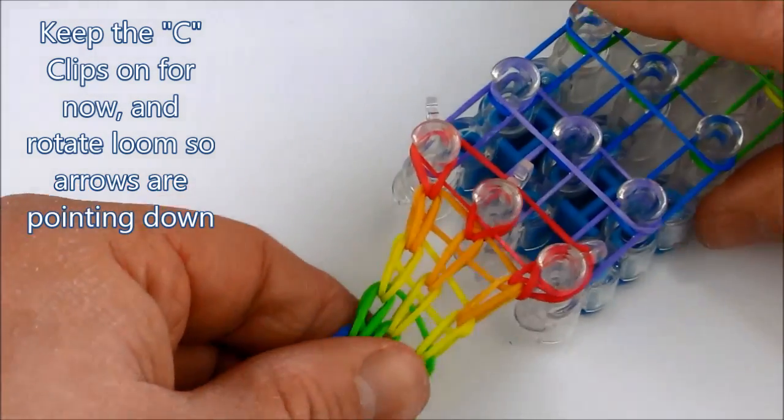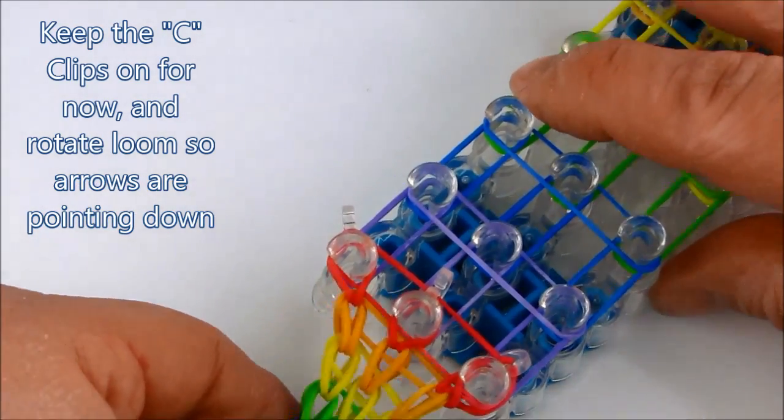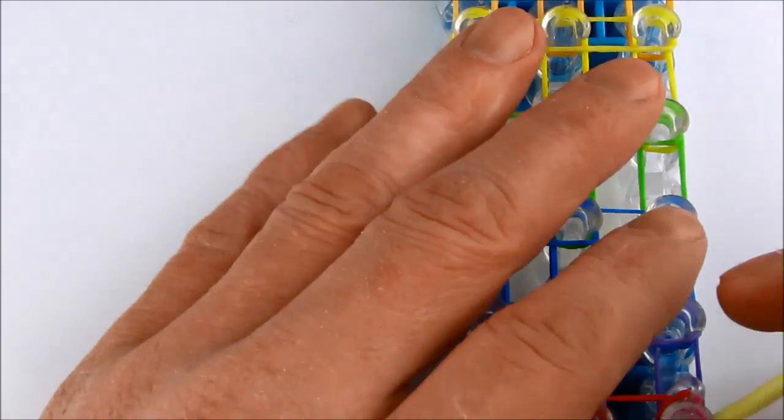At this point, we'll keep the c-clips attached. It'll make it a little bit easier to remove once we have the pattern off the loom.